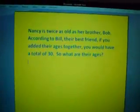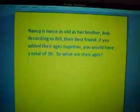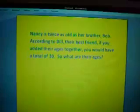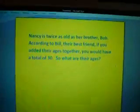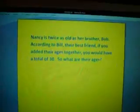Nancy is twice as old as her brother Bob. According to Bill, their best friend, if you added their ages together you would have a total of 30. So what are their ages?